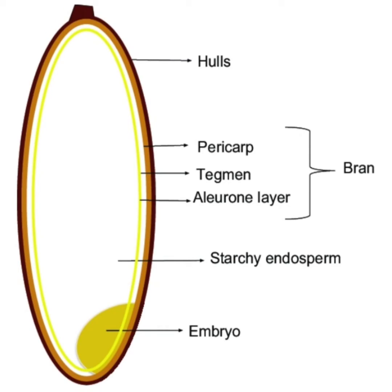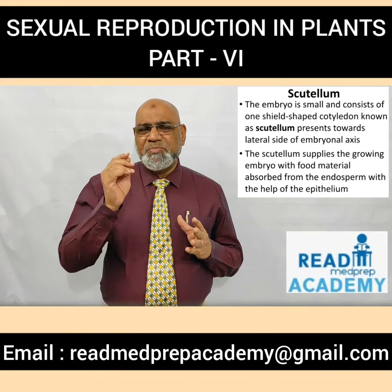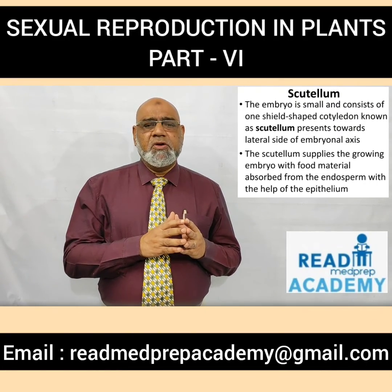In the image you can see the entire grain: the hulls, the pericarp, inside which is the tegmen, and inside the tegmen is the aleurone layer. The pericarp, tegmen, and aleurone layer together form the bran. Inside the aleurone layer is the starchy endosperm, and below is the embryo, which is small compared to the starchy endosperm. The bran is rich in fiber, B vitamins, minerals, and phytochemicals. The endosperm contains mainly carbohydrates and proteins. The germ or embryo is packed with B vitamins, minerals, and unsaturated fatty acids. The embryo is small and consists of one shield-shaped cotyledon known as the scutellum.